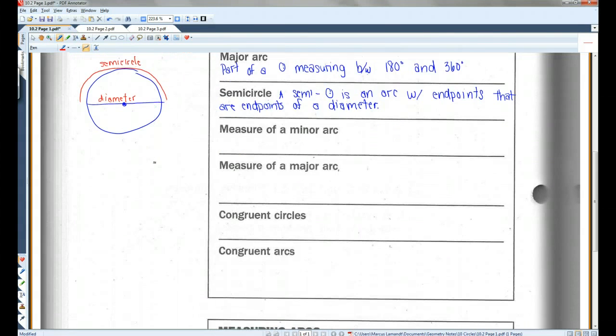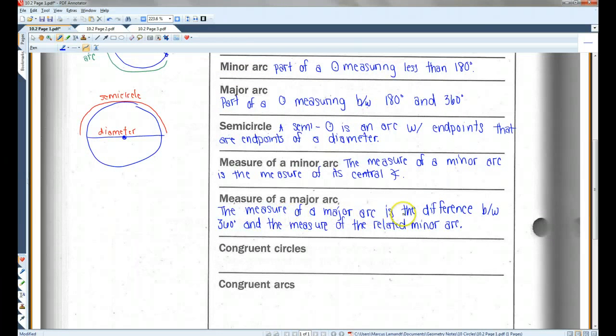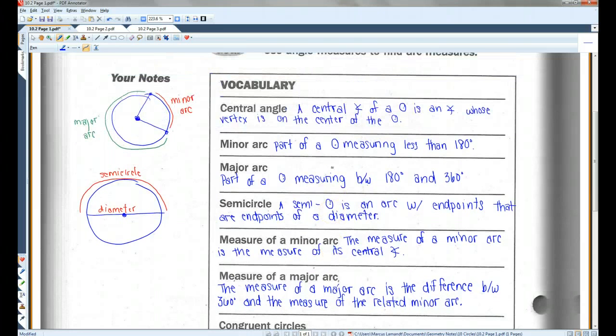All right, the measures of minor and major arcs. The measure of a minor arc is the measure of its central angle. So up here, if this angle was 80 degrees, this arc would also be 80 degrees. If this was a right angle, if it was 90 degrees, then this arc would also be 90 degrees. Whatever the central angle is, that's the measure of the minor arc.